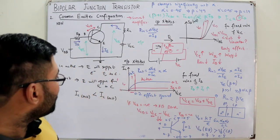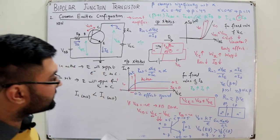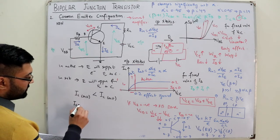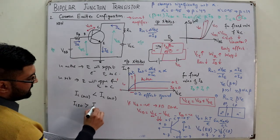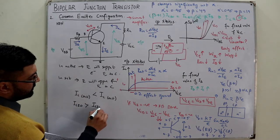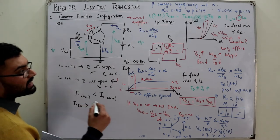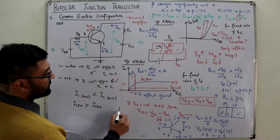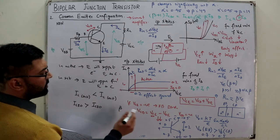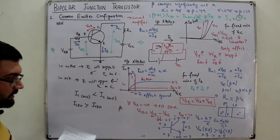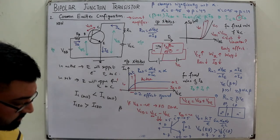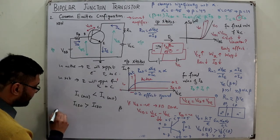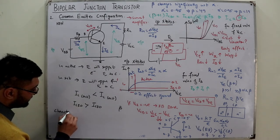ICEO is also greater than ICBO because it is multiplied by a factor of β+1 or approximately β, which is quite large. Now let's summarize the characteristics of the common emitter configuration.